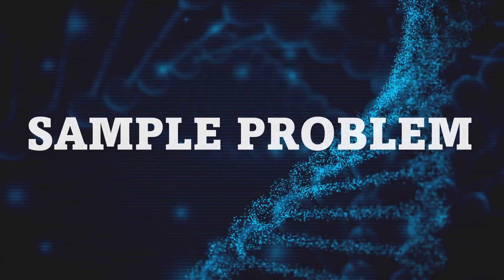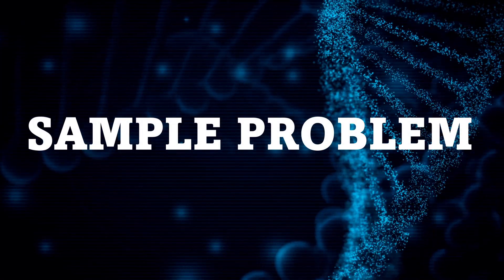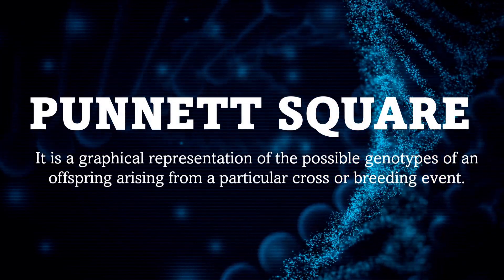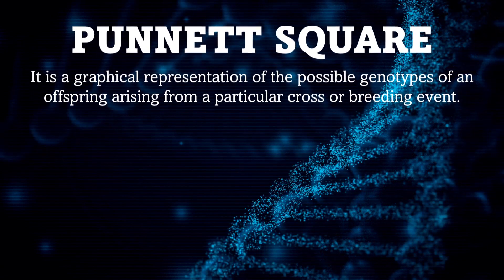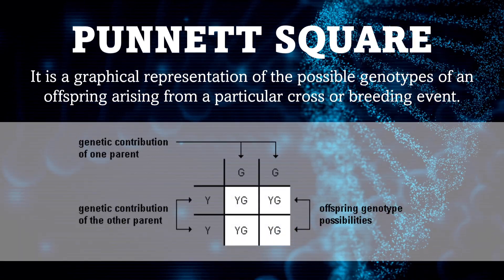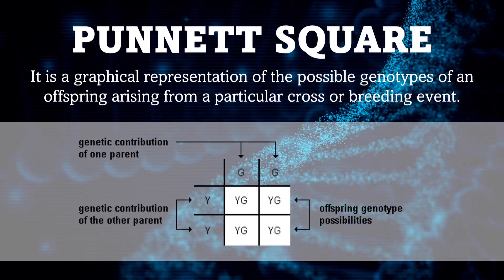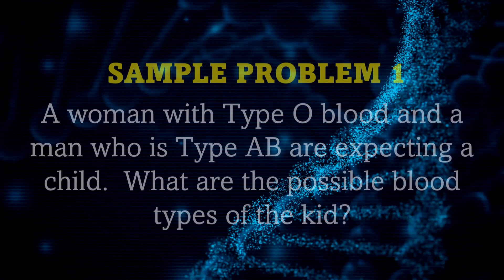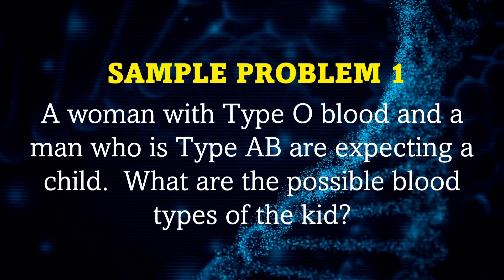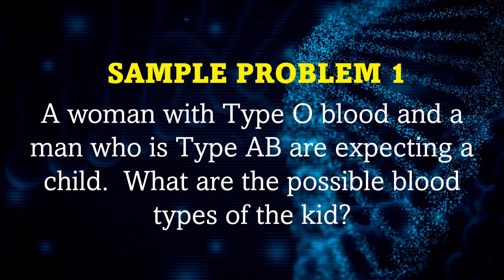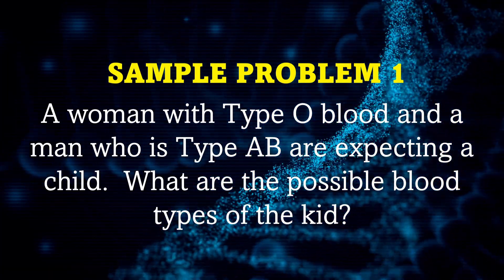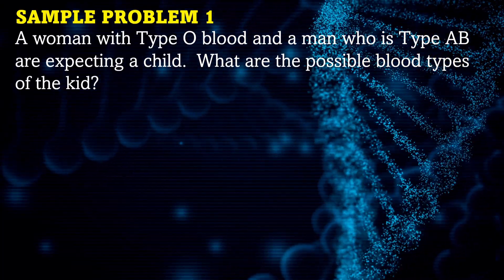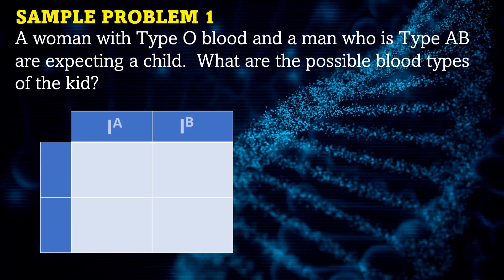Now let us have a sample problem on multiple alleles and we're going to solve it using a Punnett Square. A Punnett Square is a graphical representation of the possible genotypes of an offspring arising from a particular cross or breeding event. Sample problem: A woman with type O blood and a man who is type AB are expecting a child. What are the possible blood types of their kids?